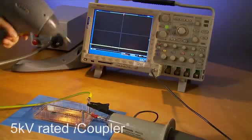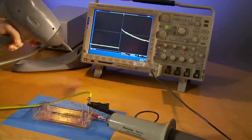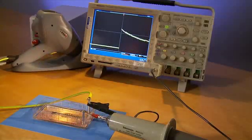Now let's look at a 5 kV rated iCoupler. It also survives the surge. Like the optocoupler, it's also a polymer insulation system, just thinner and of higher quality, and also very tolerant to surge stress.